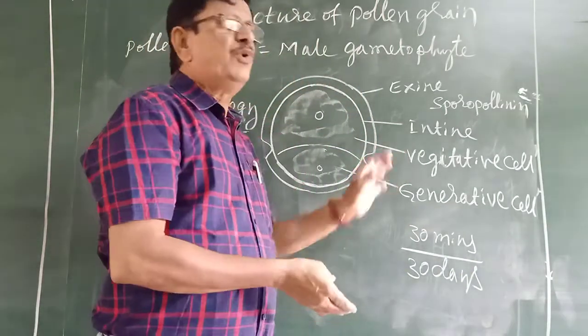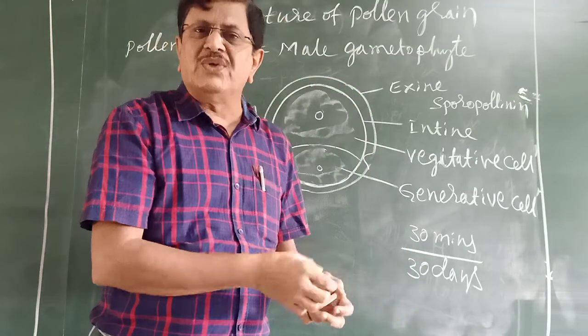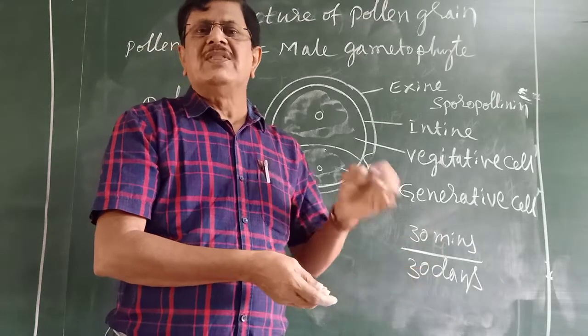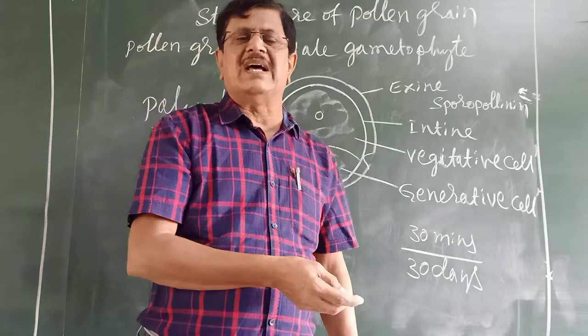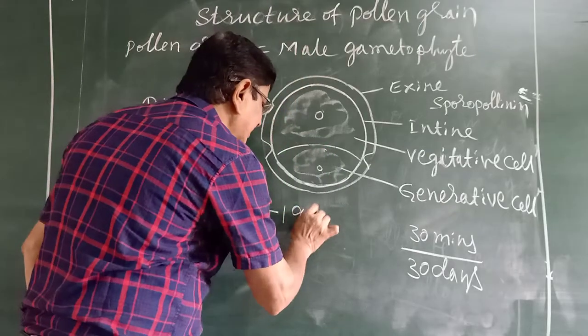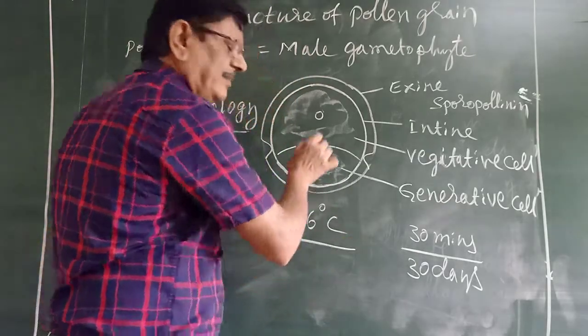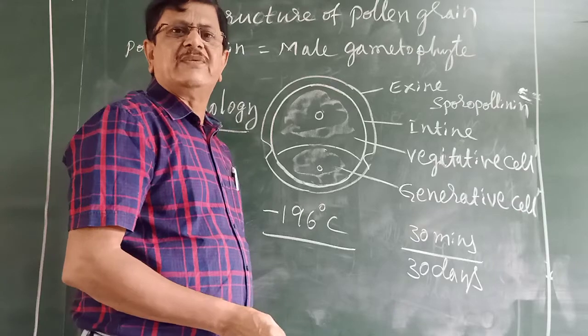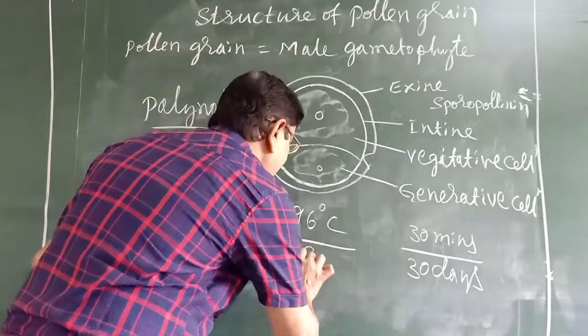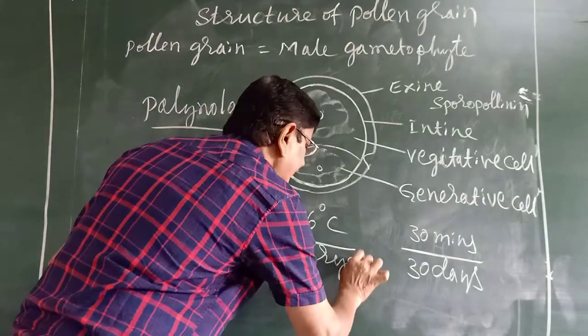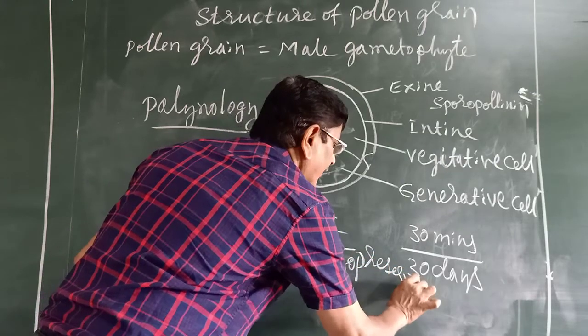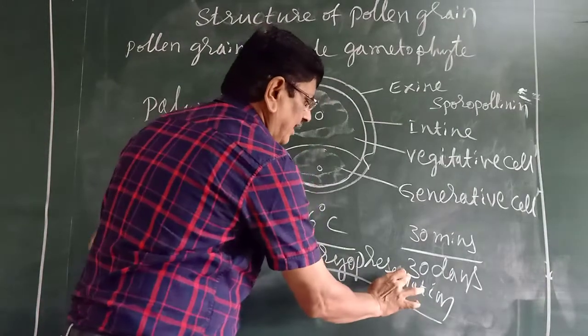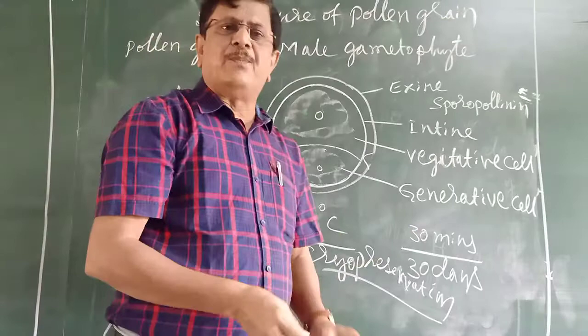These rare plant pollen grains can be preserved artificially. That is preservation of pollen grains at minus 196 degrees centigrade, also called liquid nitrogen temperature. This method of preservation is called cryopreservation. So this is about pollen grain.